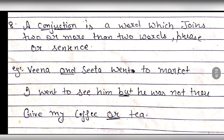A conjunction is a word that joins two or more words, phrases, or sentences. It is commonly tested at the state level in English grammar. For example: 'Veena and Sita went to market' — 'and' is the conjunction. 'I went to see him but he was not there' — 'but' is the conjunction. 'Give me coffee or tea' — 'or' is the conjunction joining two words.